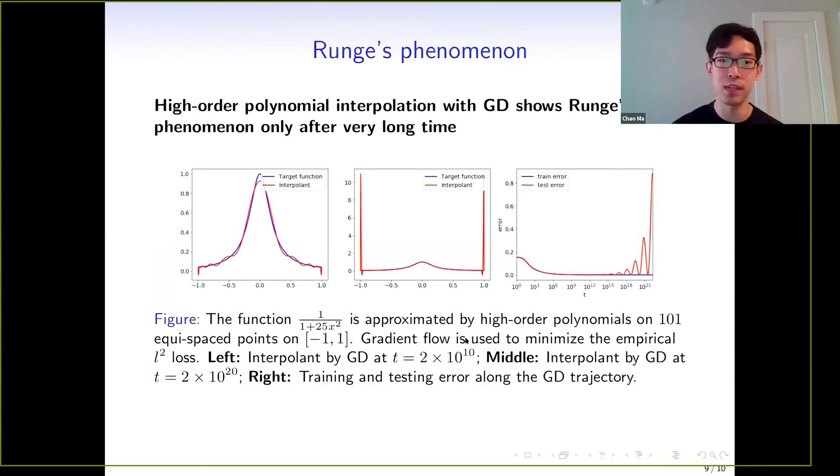As an implication of this result on numerical analysis, let's consider the Runge phenomenon. The Runge phenomenon appears when we do high order polynomial interpolation on this function, and we will see that our interpolant will have very large approximation error at the edge of the interval from -1 to 1. However, if we run a gradient flow instead of directly solving the coefficients, we will see that the Runge phenomenon will not appear for a very long time, as shown in the left panel. It has a good approximation at t equals 2×10^10, but it finally becomes bad and Runge phenomenon appears at time 2×10^20. If we look at the curve of the test error shown in the right panel, we will still see the slow deterioration phenomenon.